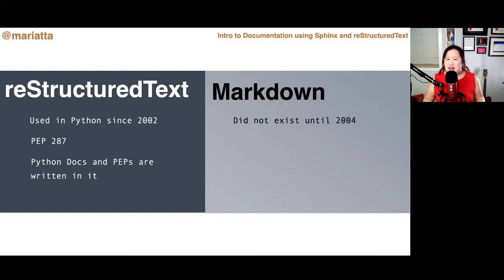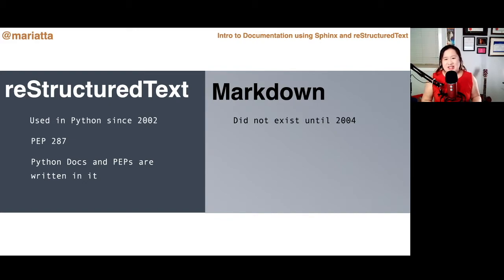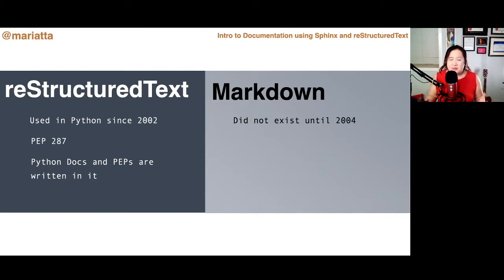Nowadays, we write pretty much everything in reStructuredText. Official Python documentation is in reStructuredText. Python Enhancement Proposals — the PEPs — are written in reStructuredText, so if you ever have a great idea for Python, you need to write it in reStructuredText. And it's not just CPython: many other Python projects like PyLint, Requests, Black, aiohttp, Python Packaging, and Flask all use reStructuredText. So if you want to contribute to any of those, knowing reStructuredText is an important and useful skill to have as an open source contributor.